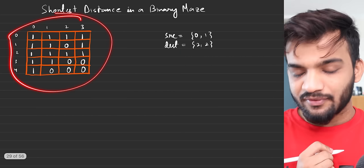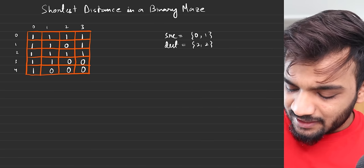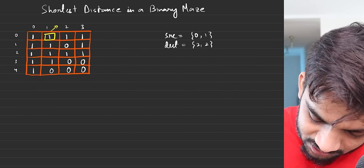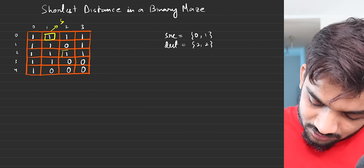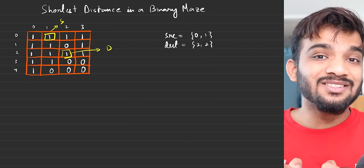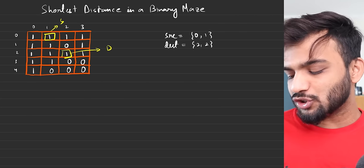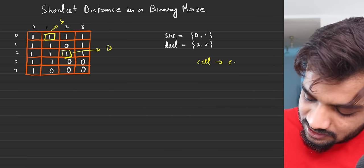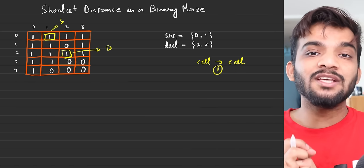Imagine this is the given grid, filled with 1s and 0s. The source is at (0,1) and the destination is (2,2). From one cell to another, the distance taken is always 1 — if they don't mention otherwise, always remember that moving from one cell to another costs 1.